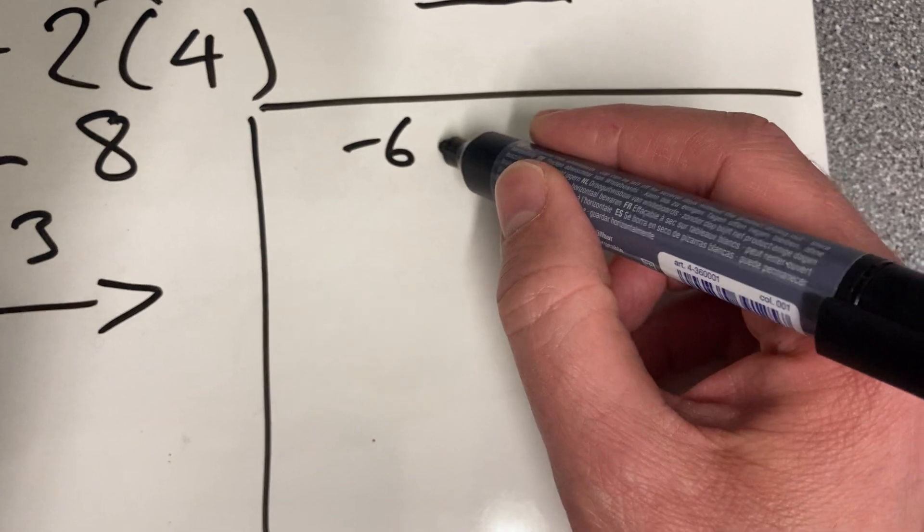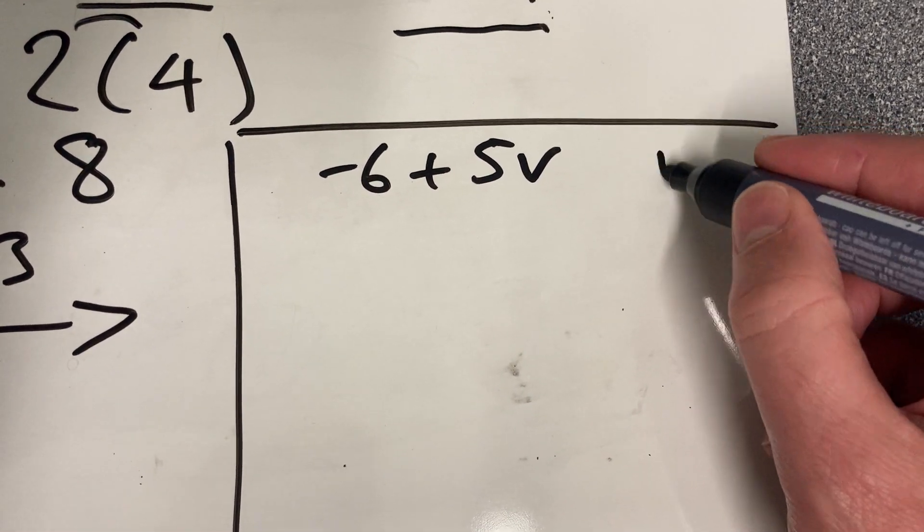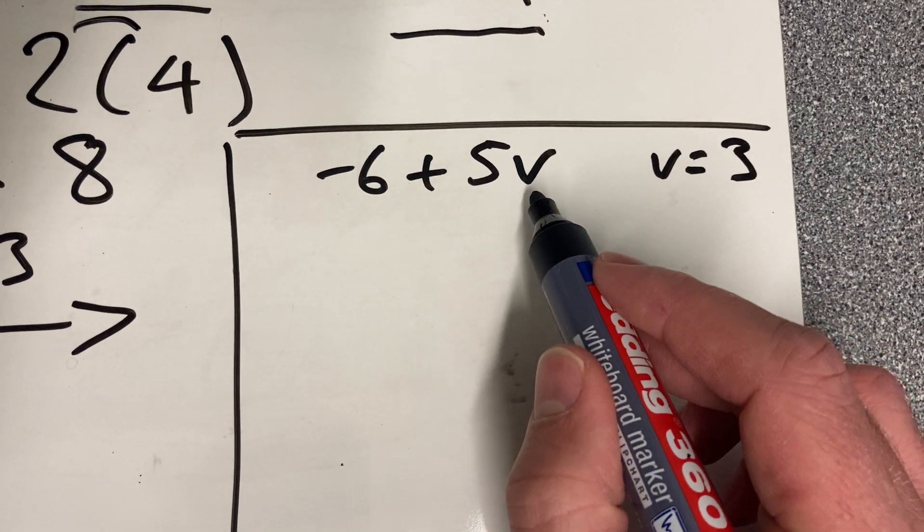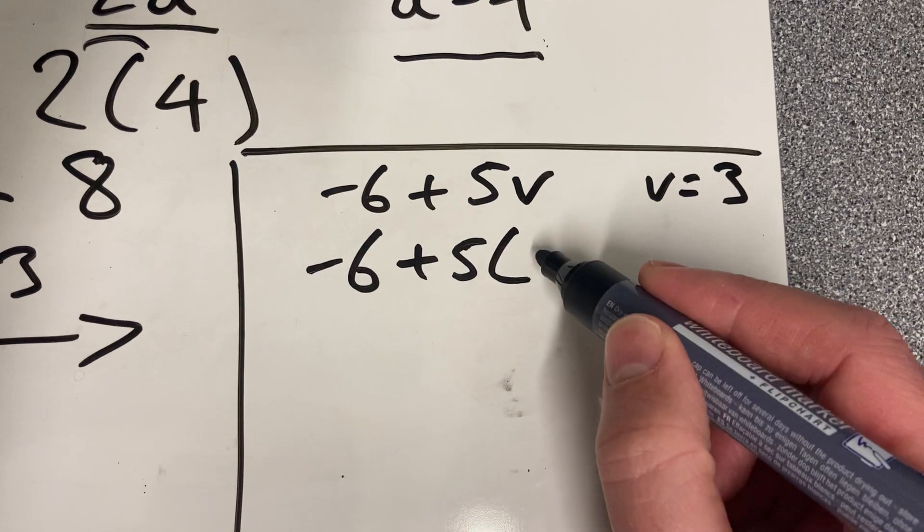Minus 6 plus 5v, and we're going to substitute in what for v? V equals 3. We're going to replace every v with 3. Minus 6 plus 5 times 3.